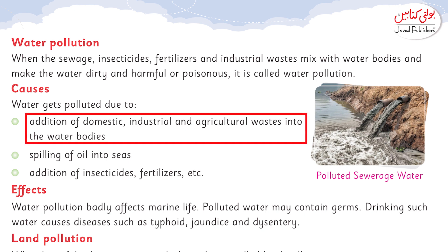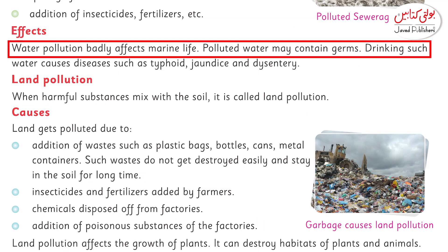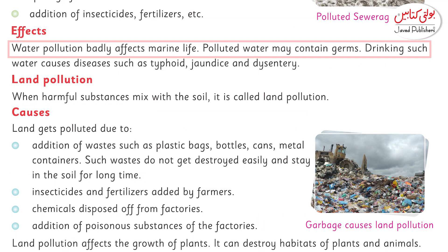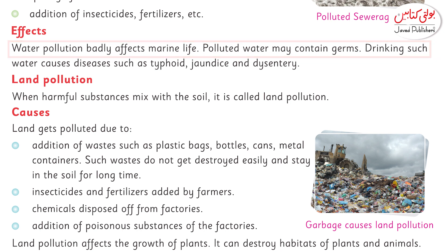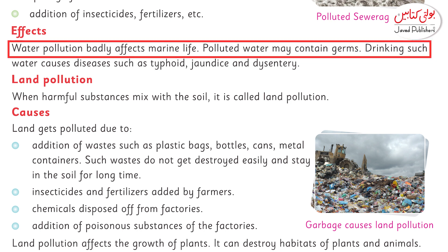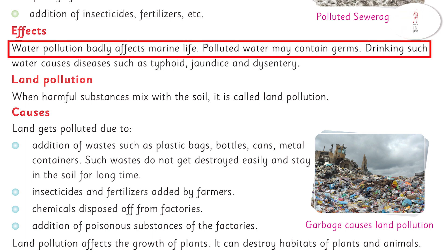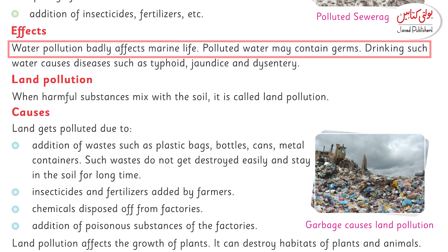When we notice the effects of water pollution, we see that it badly affects marine life. The poison is harmful to many animals and organisms. It also disturbs their habitats and can lead to their death. Many diseases are also caused by water pollution.